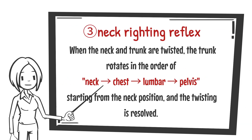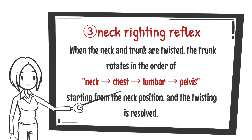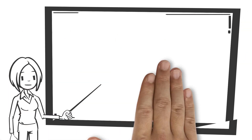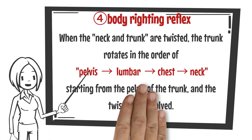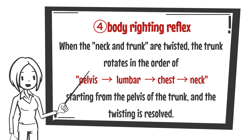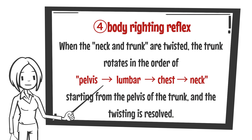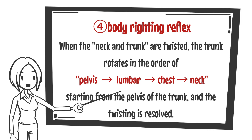When the neck and trunk are twisted, the trunk rotates in the order of neck, chest, lumbar, and pelvis starting from the neck position, and the twisting is eliminated — this is the neck righting reflex. The body righting reflex is the opposite: when the neck and trunk are twisted, the trunk rotates in the order of pelvis, lumbar, chest, and neck, starting from the pelvis.